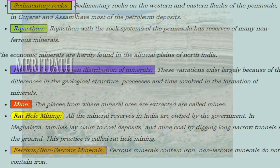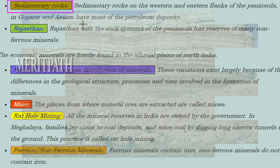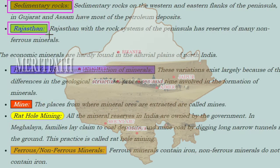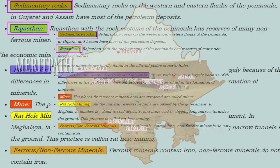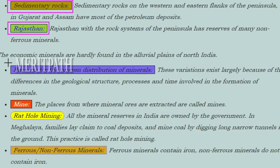Sedimentary rocks on the western and eastern flanks of the peninsula — in Gujarat and Assam — have most of the petroleum deposits. Rajasthan, with the rock systems of the peninsula, has reserves of many non-ferrous minerals. Economic minerals are hardly found in the alluvial plains of north India.